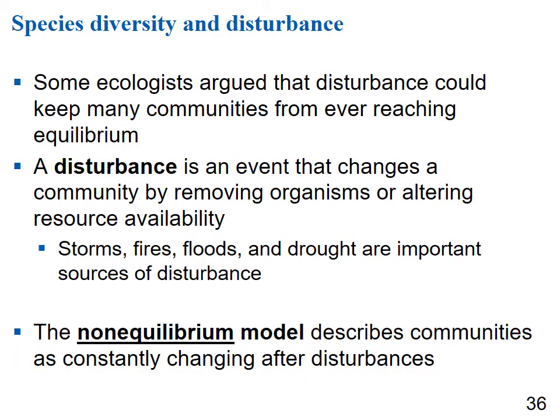Some ecologists argued that disturbance keeps many communities from ever reaching equilibrium. A disturbance is an event that changes the community by removing organisms or altering resource availability — storms, fires, floods, and drought are important disturbances. This leads to a non-equilibrium model describing communities as constantly changing after a disturbance.